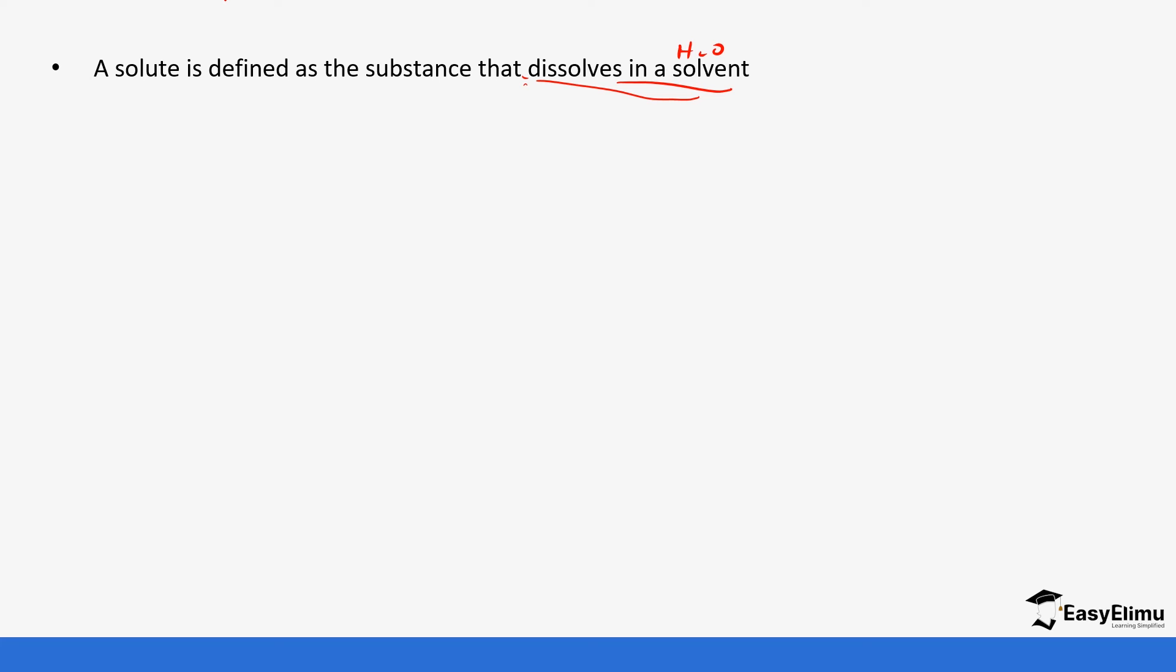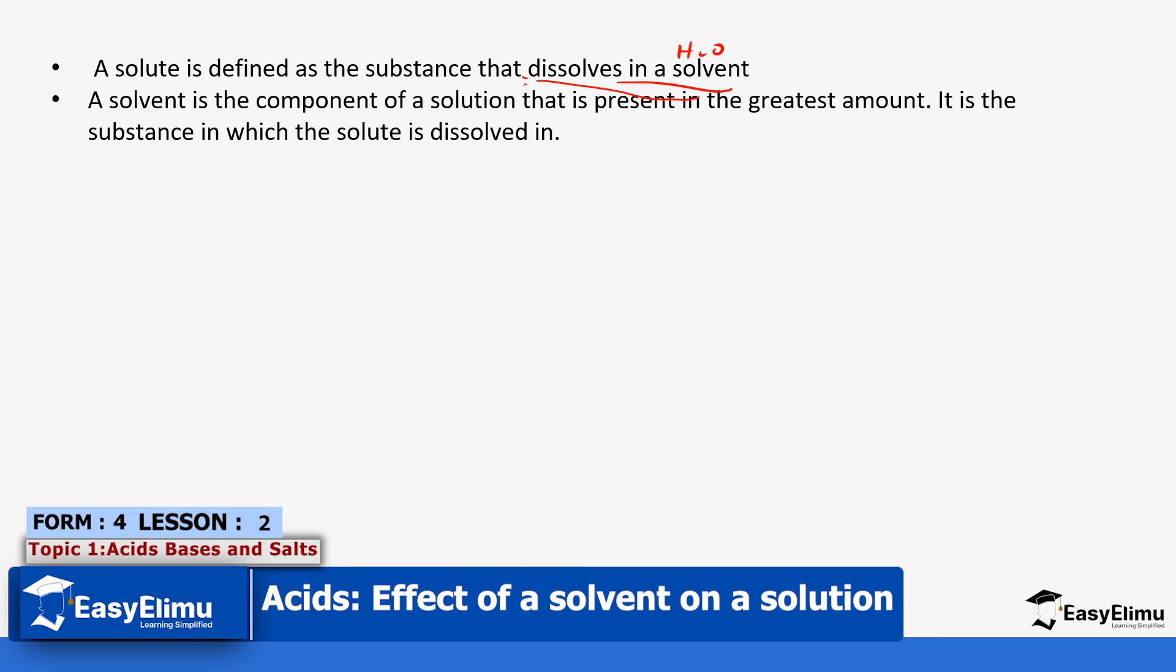Solutes can vary because they are in solid states. A solvent is a component of a solution that is present in the greatest amount. It's a substance in which the solute dissolves in.